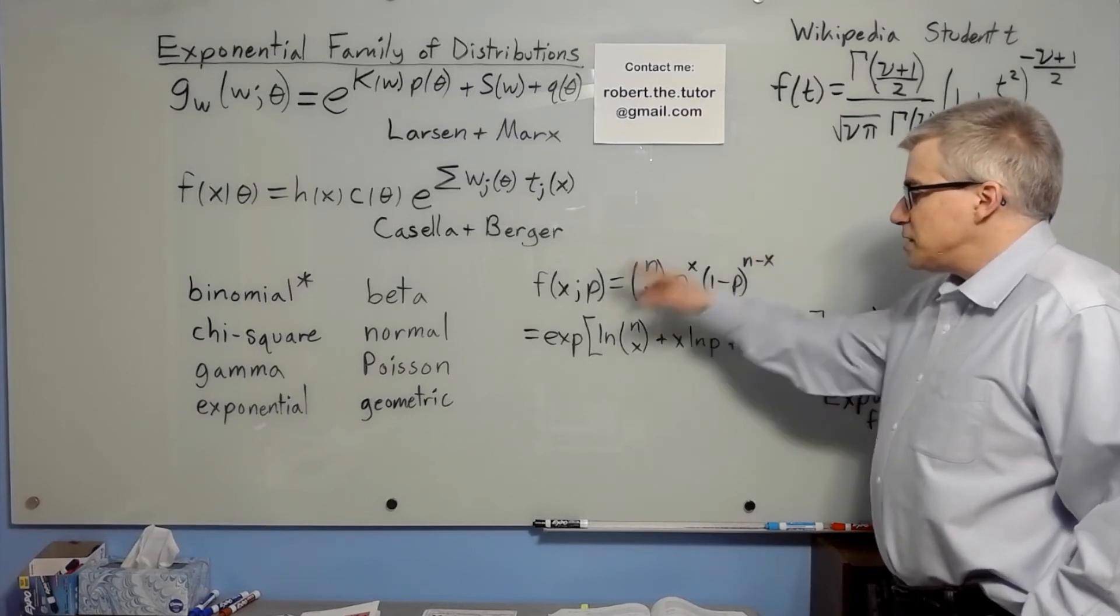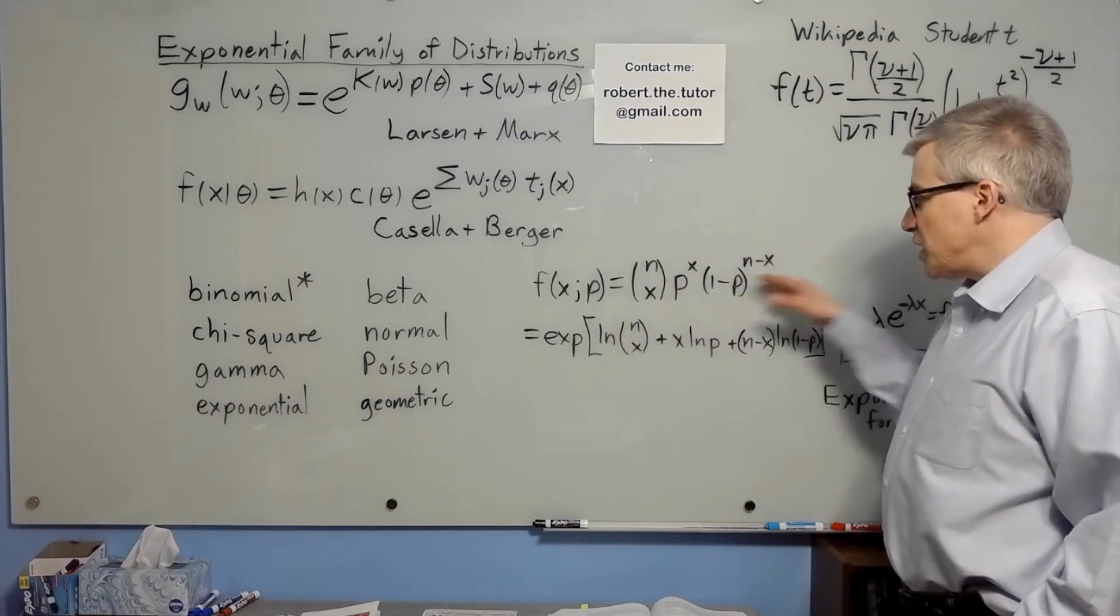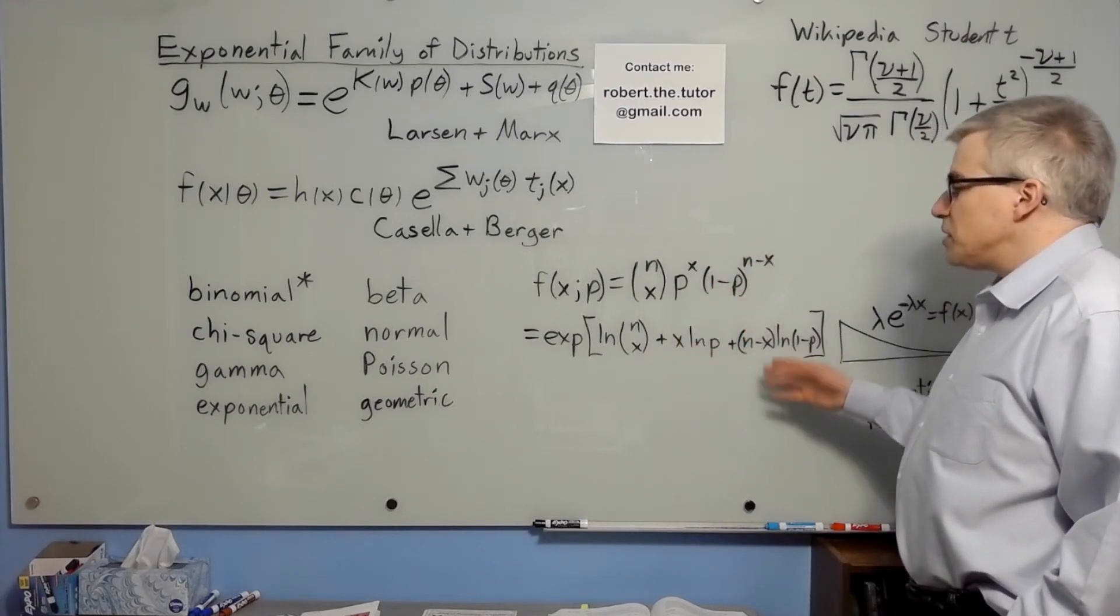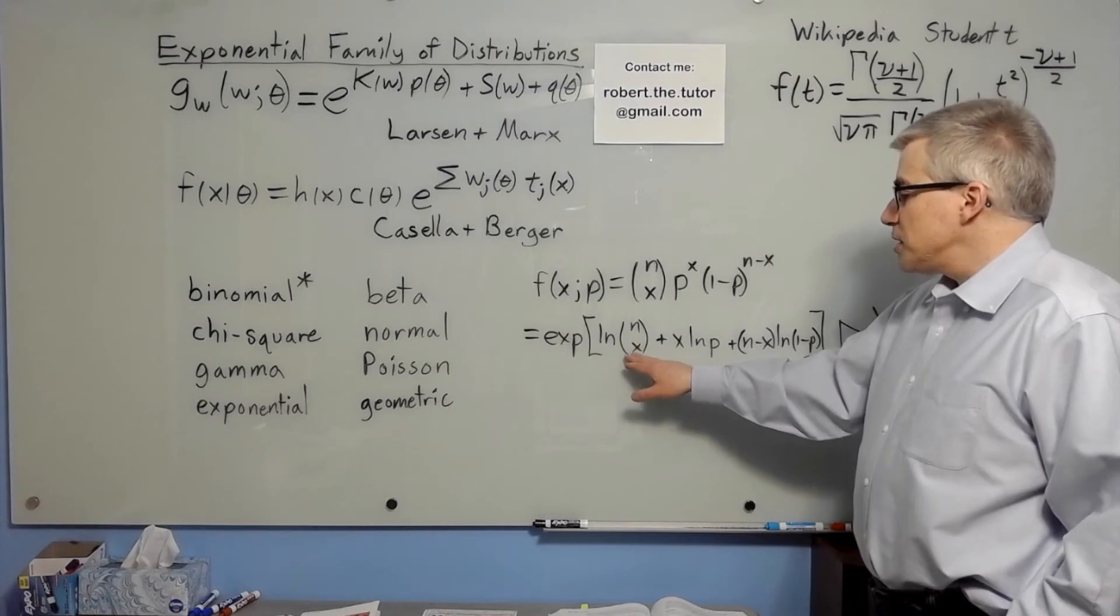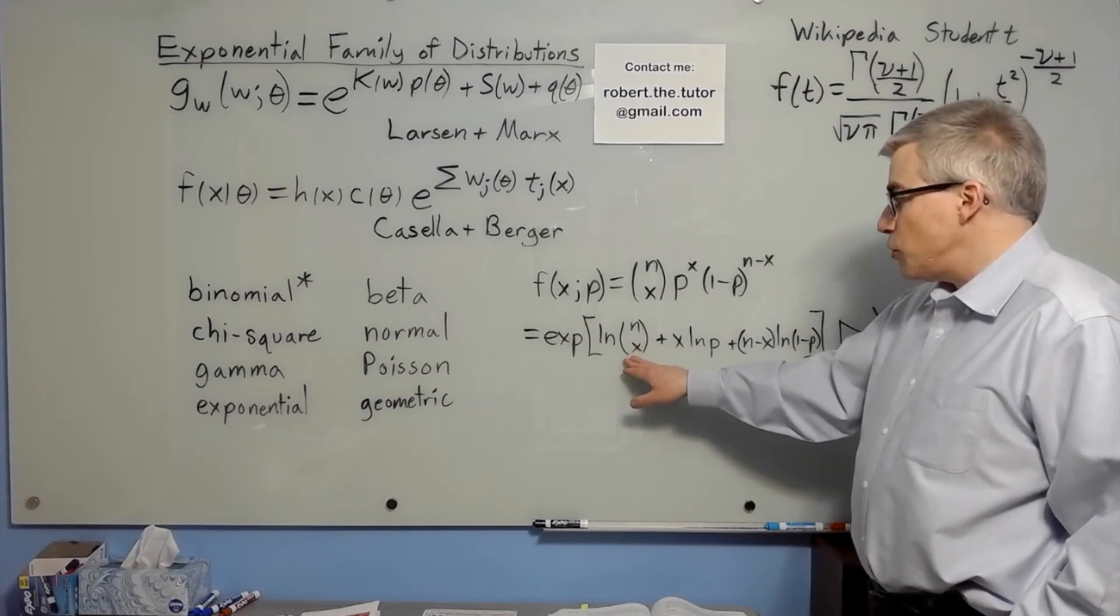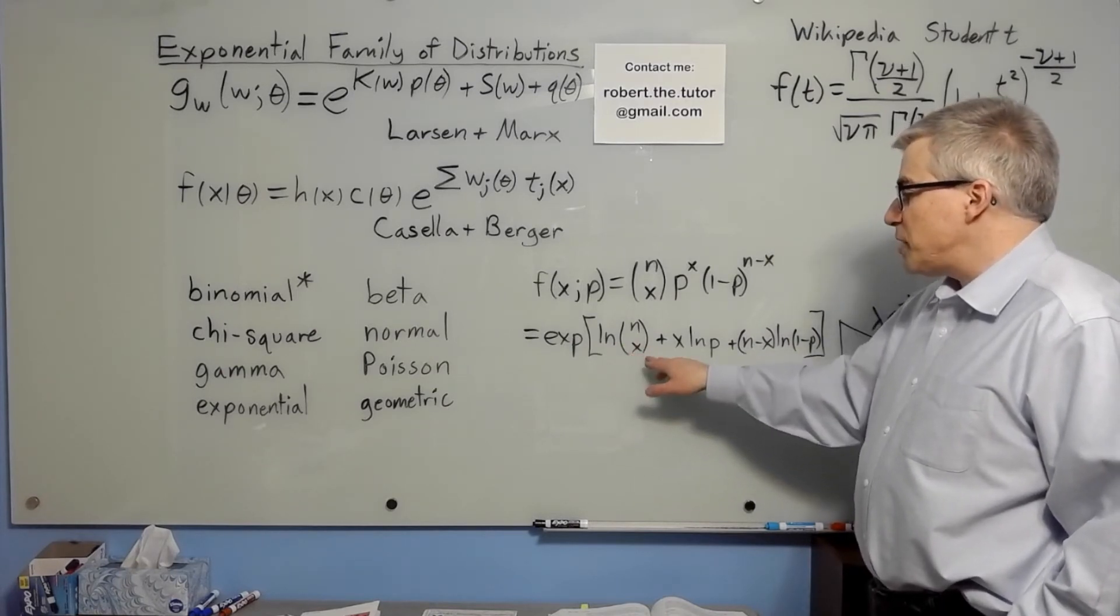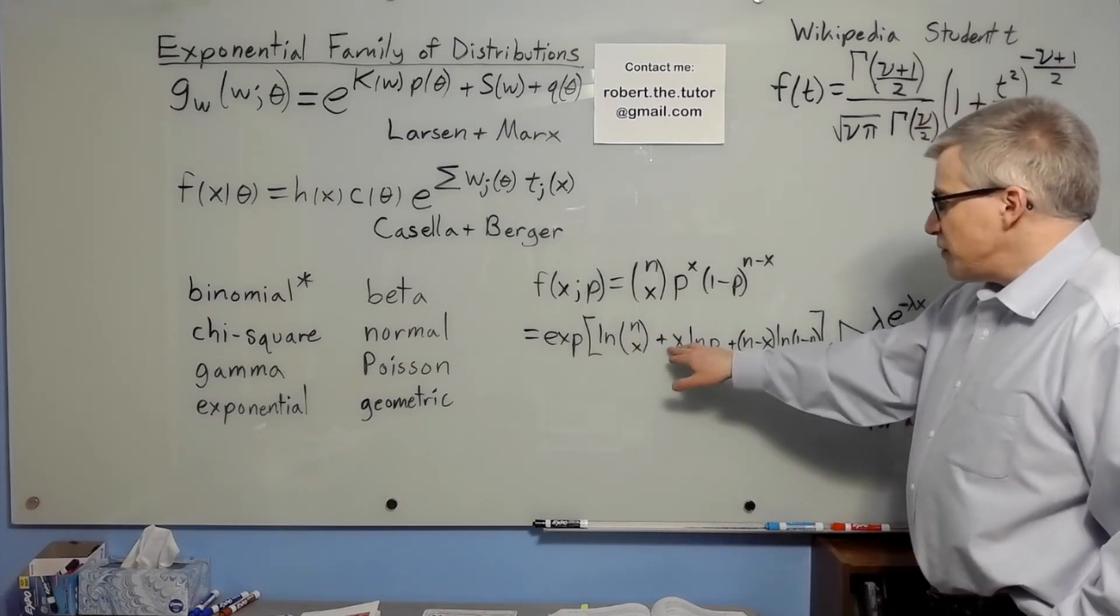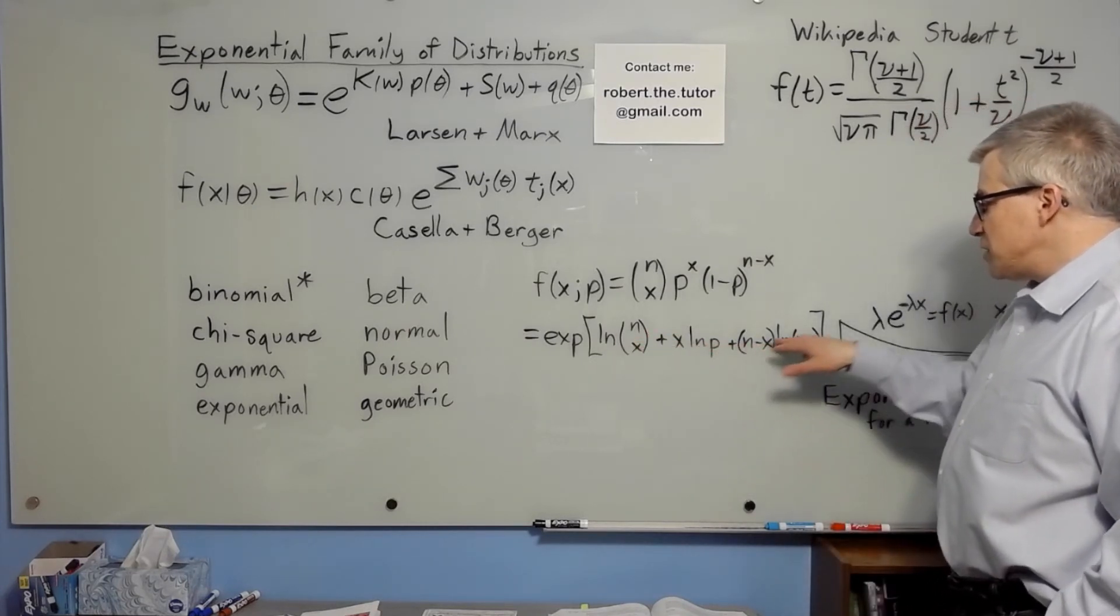You can write that as e to the natural log of that same expression and then break it up into separate logarithms and pull those out, and then we have an expression that has x and no p in it. So you could multiply by 1 and 1 could be the function of p. A function of x times a function of p.